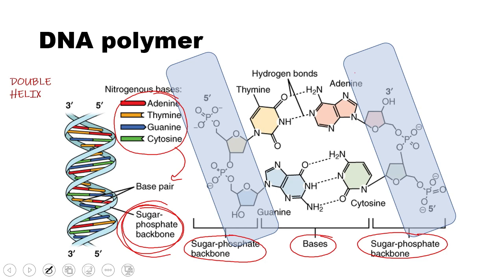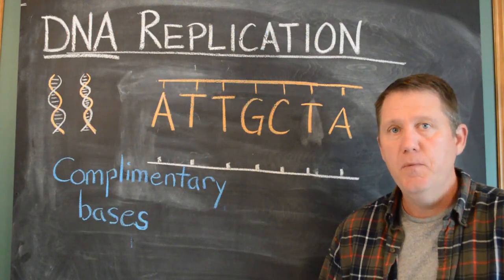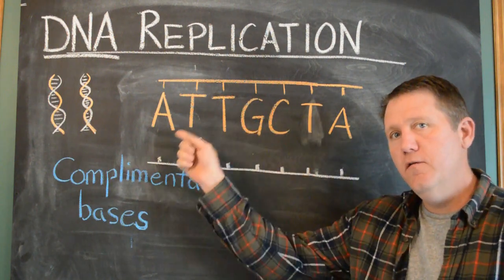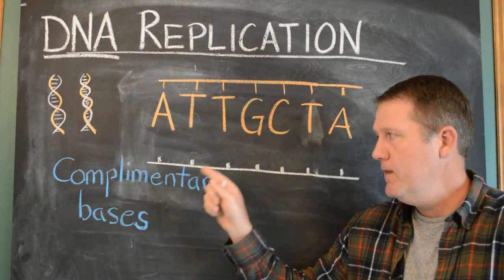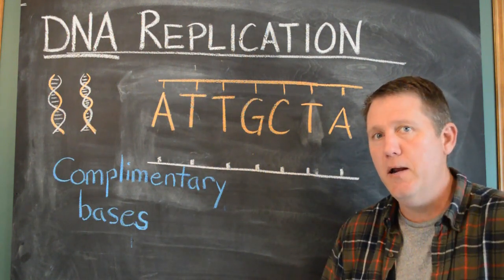And on the inside are our nitrogen bases, the information coding pieces. So there's the DNA double helix. Let's zoom in on the details of how these two strands go together, focusing on complementary bases, or complementary base pairing.